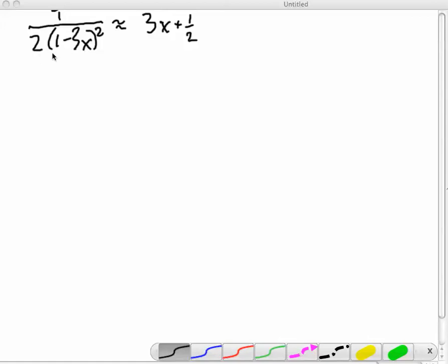It's 1 over 2 times (1 minus 3x) squared. We're going to show that this is approximately equal. This is our linearization, as it's called, of this function, very close to the point when we say a equals 0.